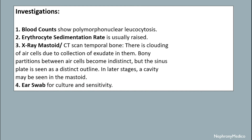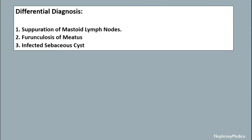CT scan shows clouding of the air cells due to collection of exudate in them. The bony partitions between air cells become indistinct, but the sinodural plate is seen as a distinct outline. An ear swab for culture and sensitivity can also be done. Differential diagnosis includes enlargement of the mastoid lymph nodes, tuberculosis of the mastoid, and infected sebaceous cyst.